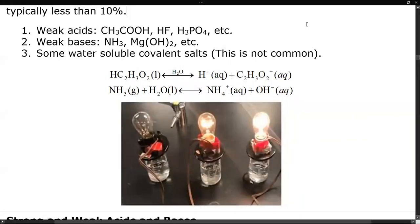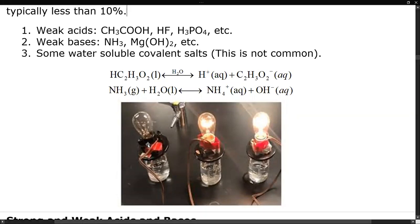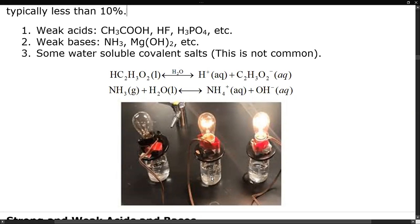Looking at these three light bulbs: the one on the far left is off, because its electrodes are in pure water or a non-electrolyte solution like table sugar — there's an open circuit. In the middle, there's a weak electrolyte like acetic acid or vinegar — it's glowing some, but not really bright, because there are some ions to conduct electricity but not many. The bright bulb on the right comes from a strong electrolyte like table salt.